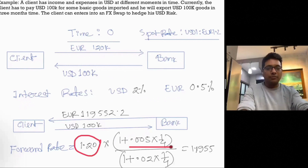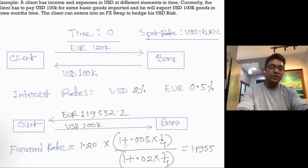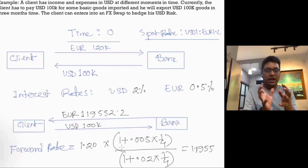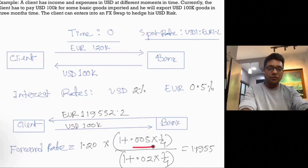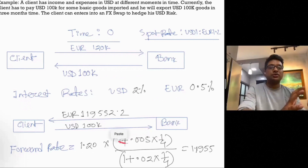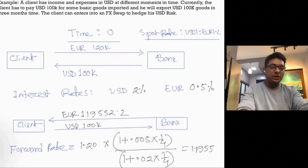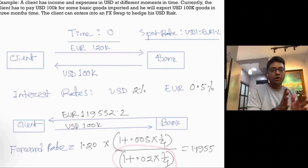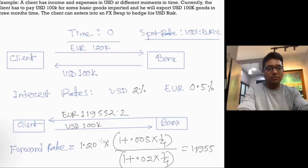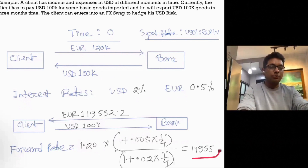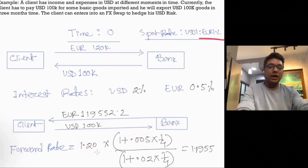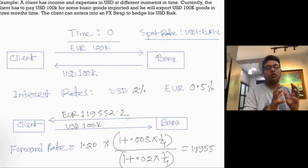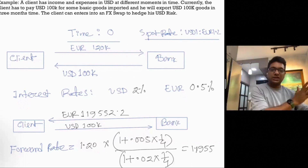The USD interest rate is 2% and the euro rate is 0.5%. For 3 months, the forward rate is calculated as: spot rate multiplied by (1 + euro rate × 0.25) divided by (1 + USD rate × 0.25), which equals 1.2 × (1 + 0.005/4) divided by (1 + 0.02/4). This gives a forward rate of approximately 1 USD to 1.1955 euros, meaning in three months the client will transact at this forward rate.